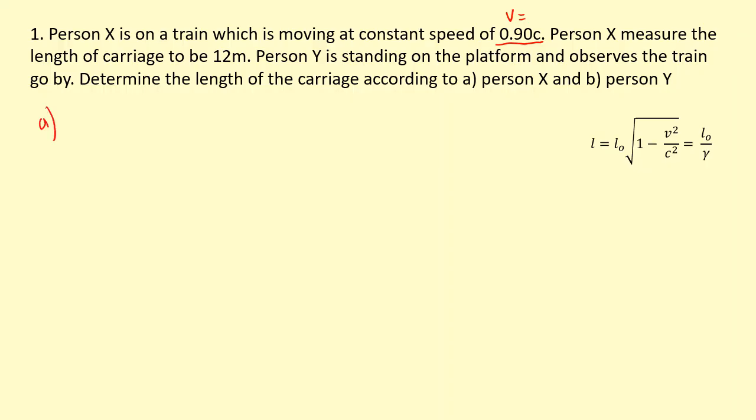So person X measured the length of the carriage while the carriage was moving, so the person was measuring inside the frame of reference of the carriage. That's just 12 meters. That is the proper length because person X is within the carriage. Person Y sees the train going past him, so the train is going to appear narrower to him.